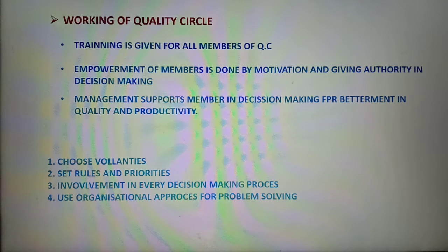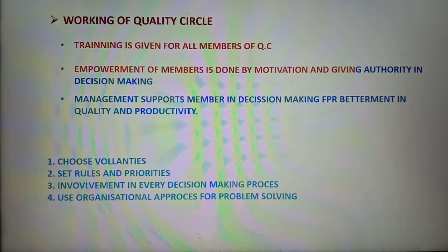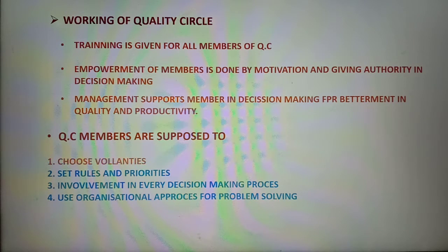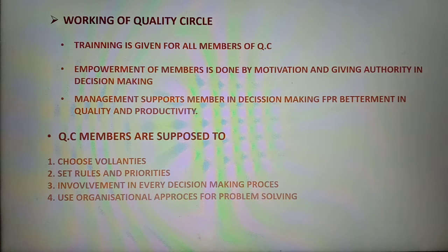Working of quality circle: Training is given to all members of the quality circle. Empowerment of members is done by motivation and giving authority in decision making. Management supports members in decision making for betterment in quality and productivity. Quality circle members are supposed to choose volunteers, set rules and priorities, and be involved in every decision making process. They also use organizational approaches and problem solving.